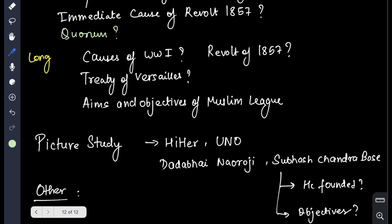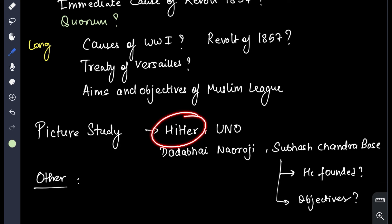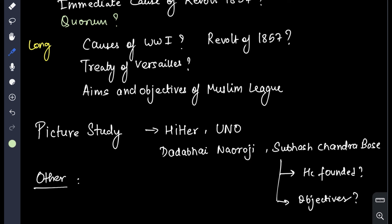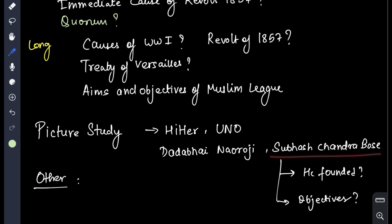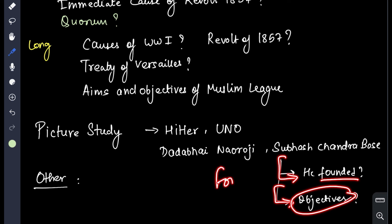Then we will talk about picture study. You can be shown pictures of Hitler, or symbols of the UN, UNICEF, or WHO. Photos of early nationalists and assertive nationalists also come in picture study. For example, a question was asked about Subhas Chandra Bose — what he founded, and what the objectives of the Forward Block were. So you need to know the leaders and their associated organizations and objectives.